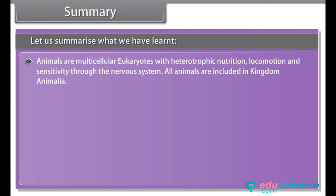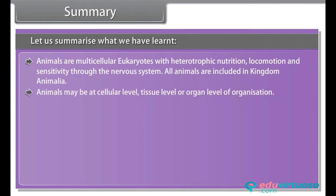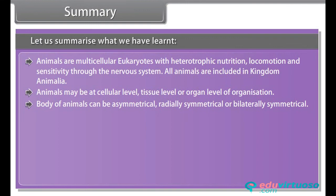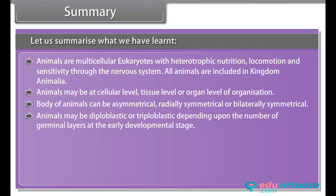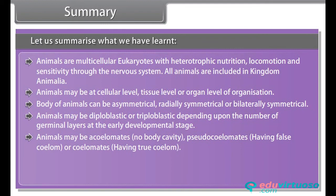Animals are multicellular eukaryotes with heterotrophic nutrition, locomotion, and sensitivity through the nervous system. All animals are included in kingdom Animalia. Animals may be at cellular level, tissue level, or organ level of organization. The body of animals can be asymmetrical, radially symmetrical, or bilaterally symmetrical. Animals may be diploblastic or triploblastic depending upon the number of germinal layers at the early developmental stage. Animals may be acoelomates with no body cavity, pseudocoelomates having a false coelom, or coelomates having a true coelom.